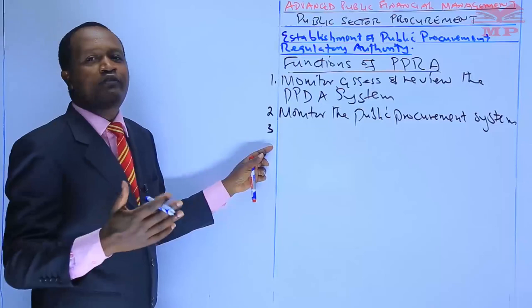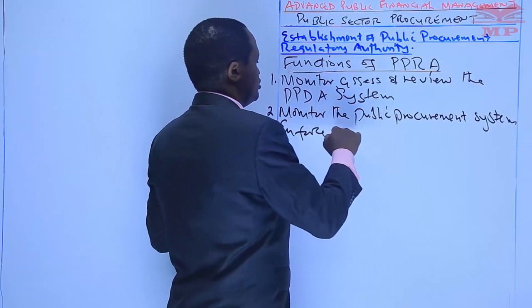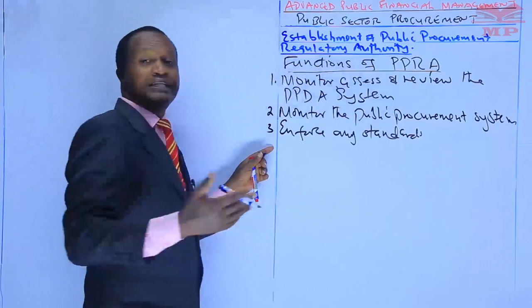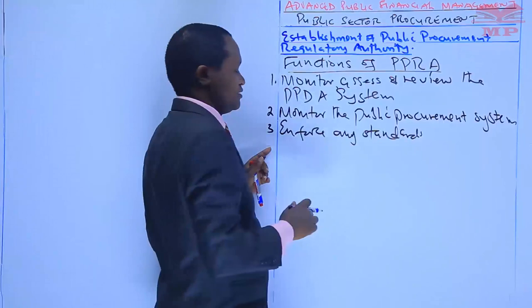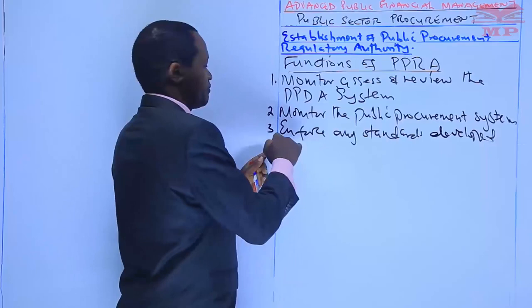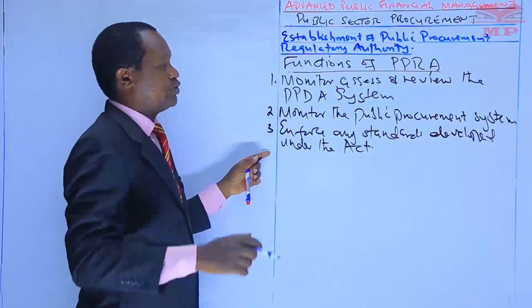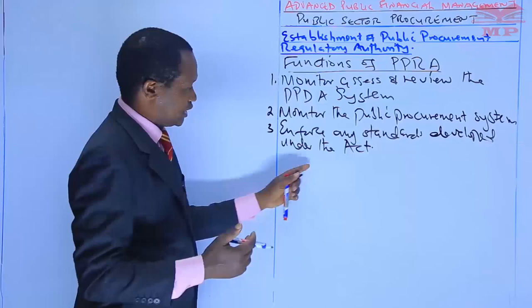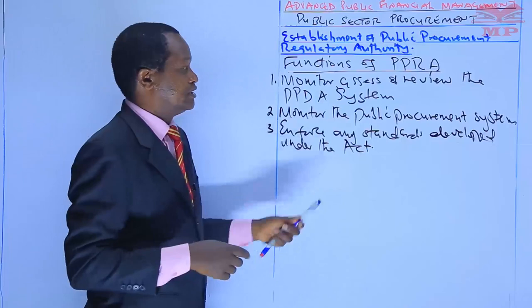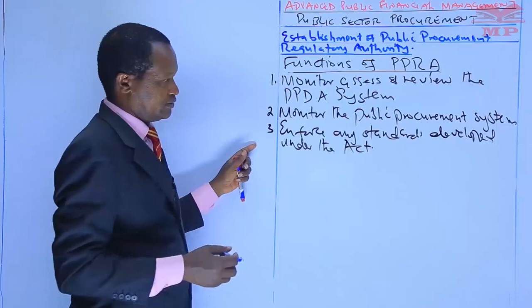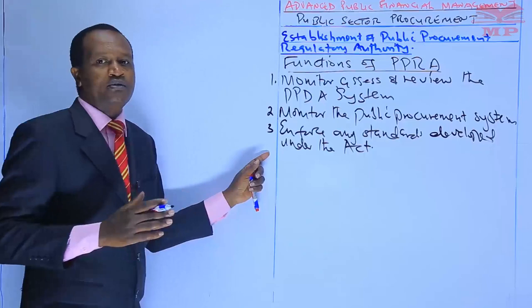The third function of PPRA is to enforce any standards developed under the Act — that is, the Public Procurement and Asset Disposal Act. There are standards that have been laid down in the Act, and the PPRA must ensure that those standards are enforced.